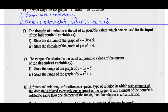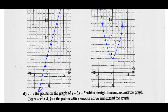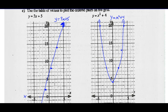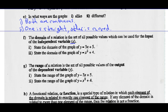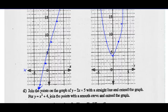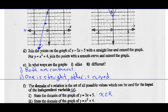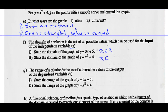The domain of a relationship is the set of all possible values which can be used for the input of the independent variable — so all the values for X. For the graph of Y equals 3X plus 5, we look at all possible X values along the horizontal axis. This graph goes forever to the left and down, and forever to the right and up, so it goes forever right and forever left. Therefore the domain is X is any real number. For Y equals X squared plus 4, the graph goes forever up and left and forever up and right — again going forever left and forever right — so X can be any real number.